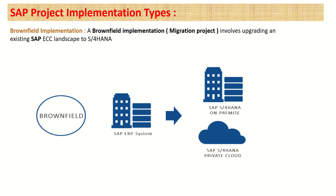One more project type is the upgrade project. In an upgrade project, consider a scenario where they are currently using S/4HANA 1709 and want to move to the 2020 or 2022 release. Even though they are already using S/4HANA, they want to upgrade to the latest version. These are called upgrade projects — upgrading the same system from a lower version to the latest SAP release.